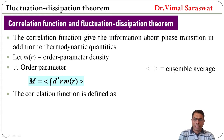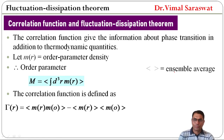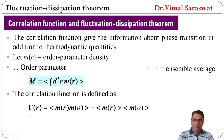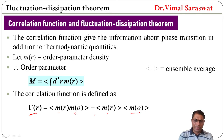The correlation function is defined as: Γ(r) = ⟨M(r)·M(0)⟩ minus the product of ⟨M(r)⟩ and ⟨M(0)⟩. This is our correlation function.